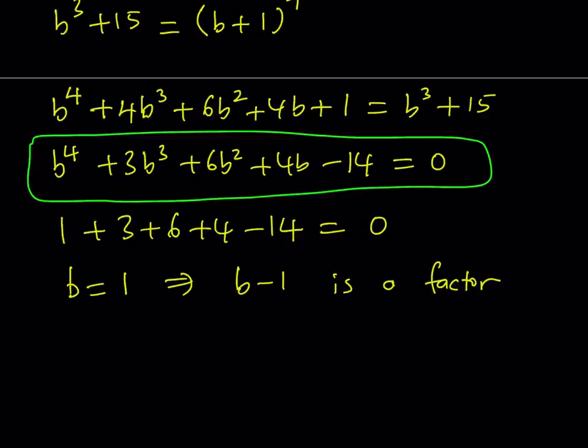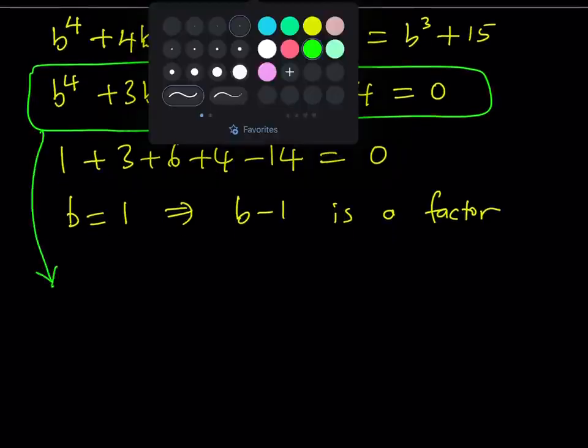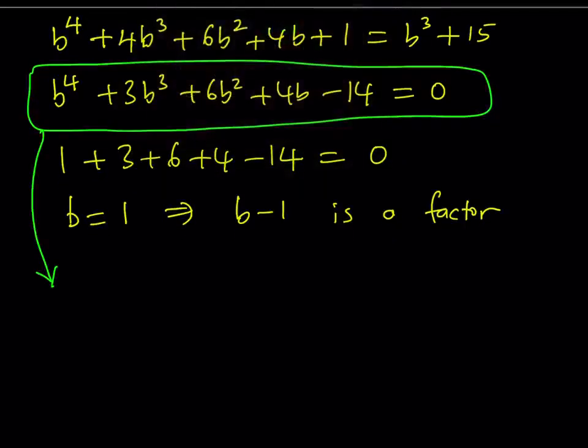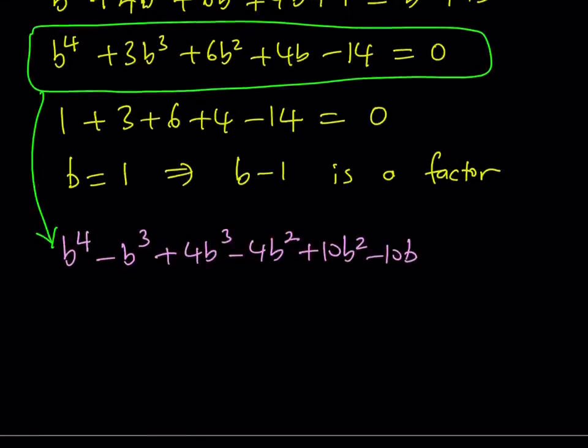So we know that B equals 1 is a solution. So let's go ahead and factor this expression. So I'm going to work off of this one. How do I manipulate it so that B minus 1 is always a factor? So this is what I'm supposed to do. Start with B to the fourth power and then subtract B cubed from it. So notice that B minus 1 is a factor, but I have 3B cubed so I have to add 4B cubed. That means I need to subtract 4B squared but I have 6B squared so I need to add 10B squared, then I need to subtract 10B to make it B minus 1. But I have 4B so I need to add 14B and I end up with subtracting 14 which balances out and everything looks good.